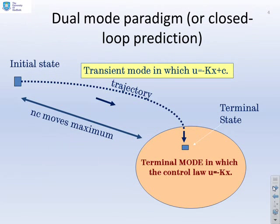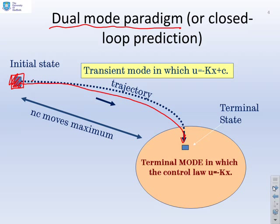This picture gives you an idea of a typical dual-mode paradigm. You assume you've got some initial state, and for the first nc steps, you're going to use u equals minus kx plus c, and then for some time after that, you're just going to use u equals minus kx. So you have two modes in your behaviors or in your predictions, and that's why it's called dual-mode.